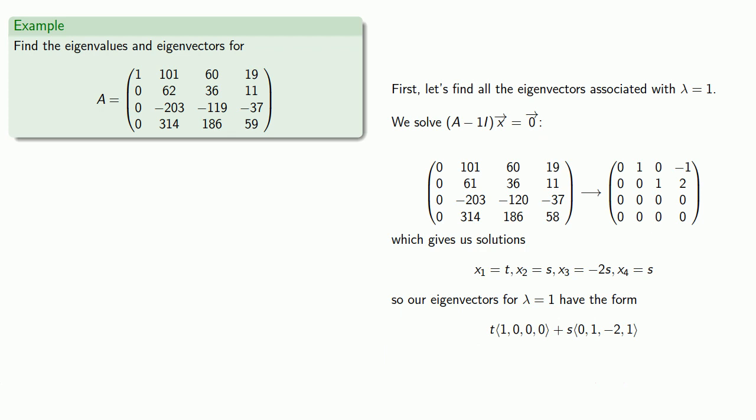And so we'll take one of our eigenvectors as (1, 0, 0, 0), and the other one as (0, 1, -2, 1).